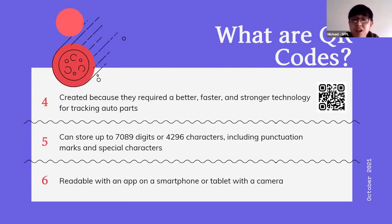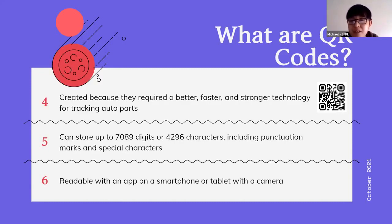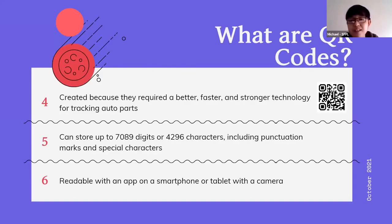Some devices, you just activate the camera and it automatically knows that it is a QR code. But some smartphones and tablets have a camera without the option to choose to scan QR codes, and it's not automatic. For those devices, you have to download a third-party app from the Google Play Store for Android, or the Apple App Store for iPhone or iPad.